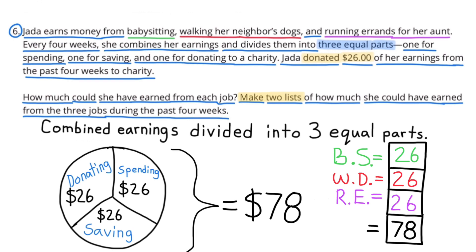My first list is just going to have $26 for each of the jobs: $26 for babysitting, $26 for walking dogs, and $26 for running errands. That totals $78.